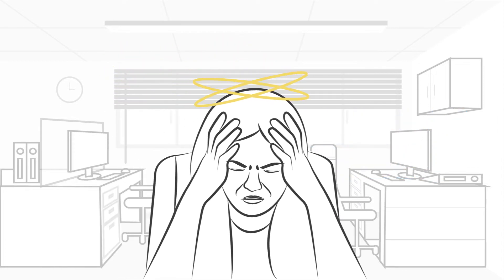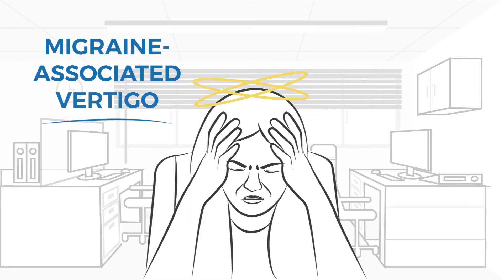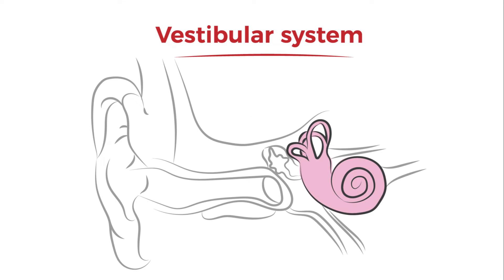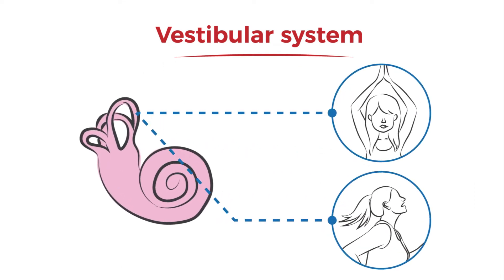Your doctor might also call vestibular migraine migraine-associated vertigo or migranous vertigo. The vestibular system is in the inner ear and controls your balance and perception of movement.